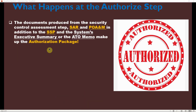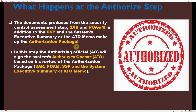The documents produced from the security control assessment step — that is the Security Assessment Report (SAR) and the Plan of Action and Milestones (POA&M) — in addition to the System Security Plan (SSP) and the system's executive summary or ATO memo, make up the authorization package.